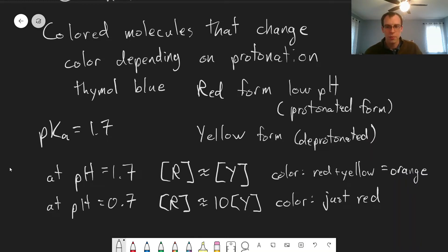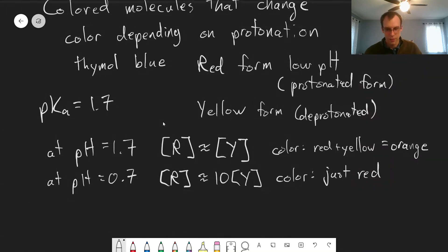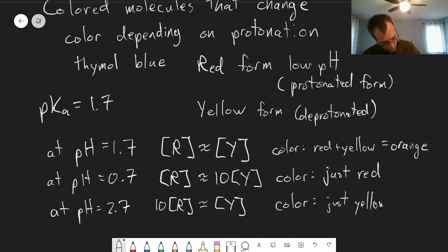And if we go to pH 2.7, we'll have the opposite. The concentration of the red will be less than the concentration of the yellow. And the color of our solution will be just yellow because there won't be enough of the red present to make a difference.